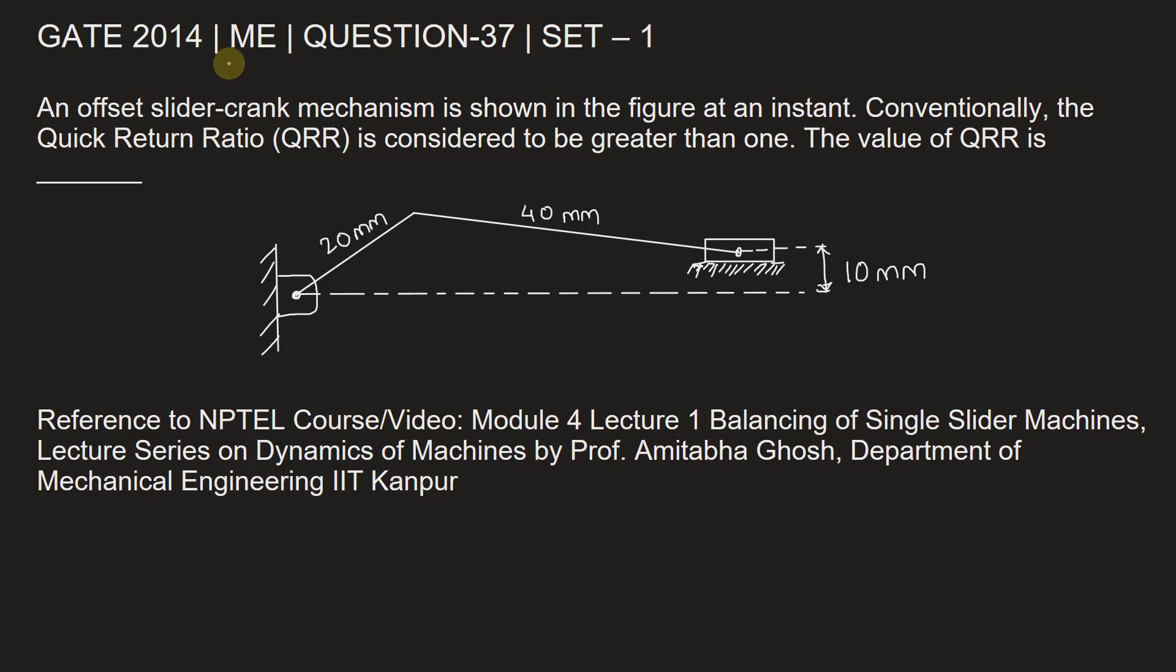This question is from GATE 2014 Mechanical Engineering paper, set 1, question number 37. An offset slider-crank mechanism is shown in the figure at an instant. Conventionally, the Quick Return Ratio QRR is considered to be greater than 1.